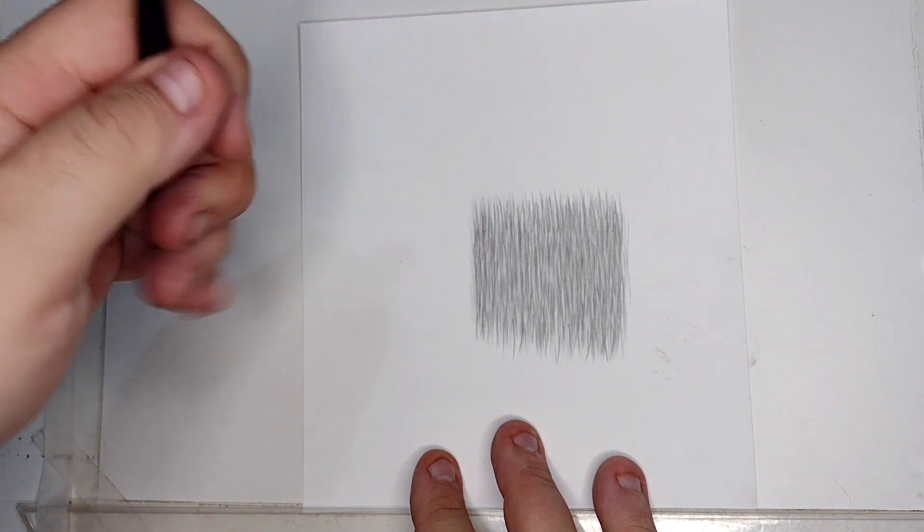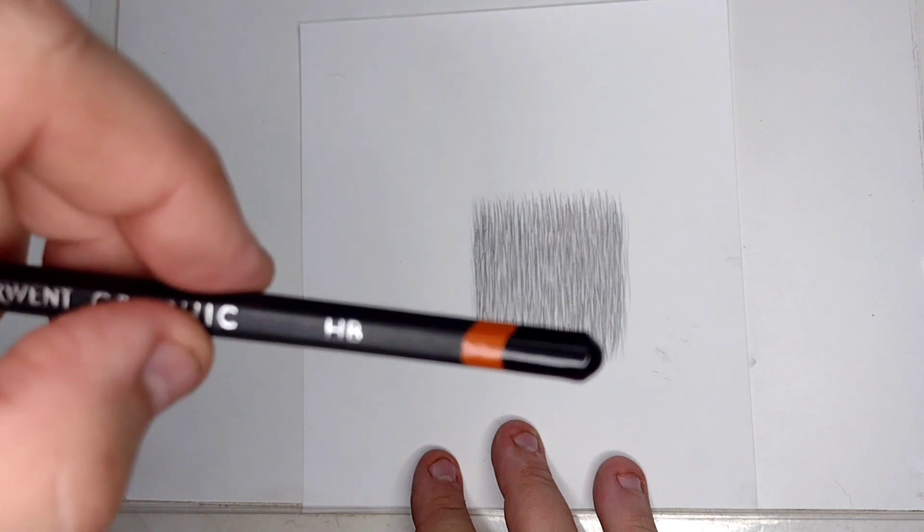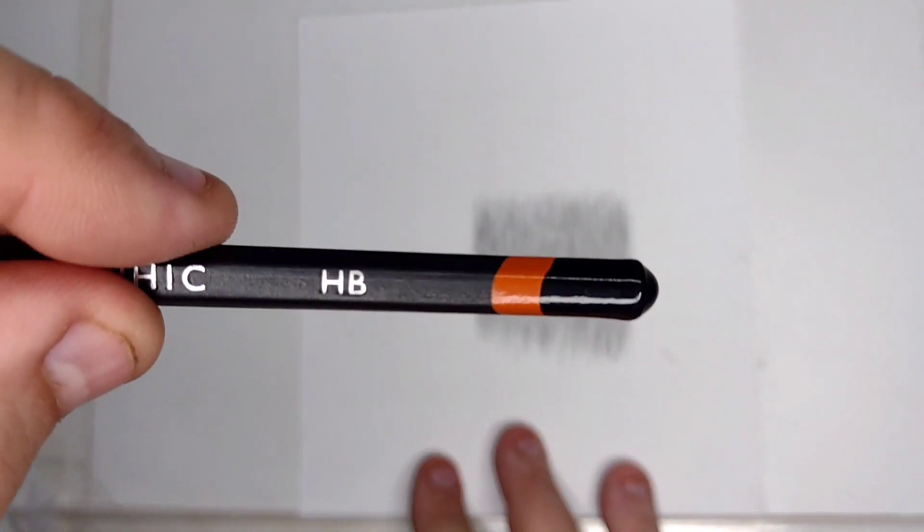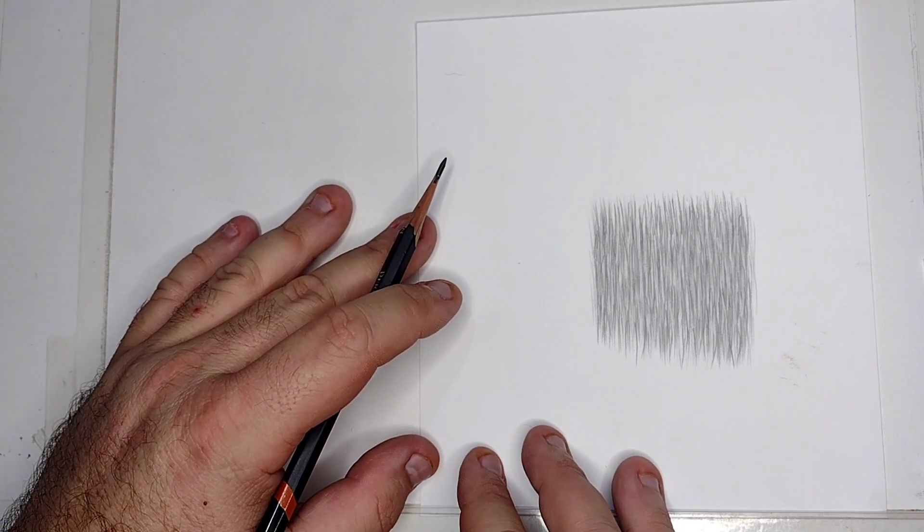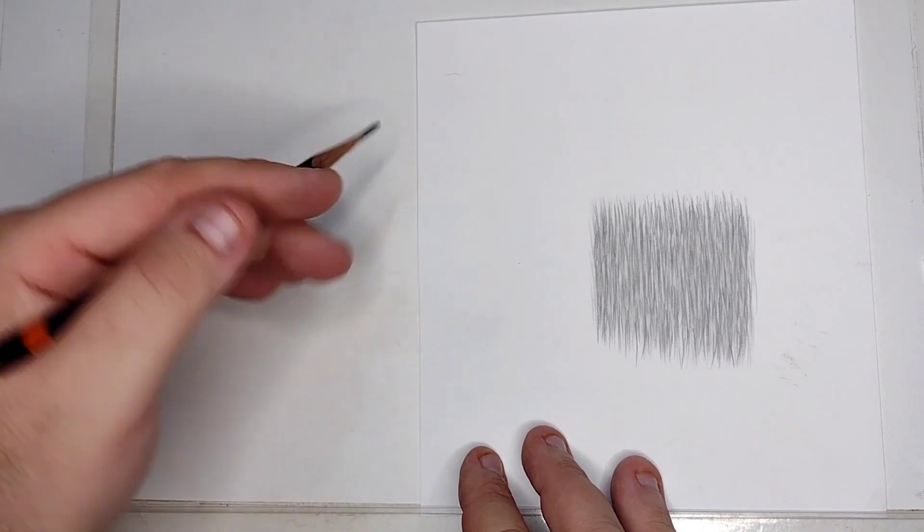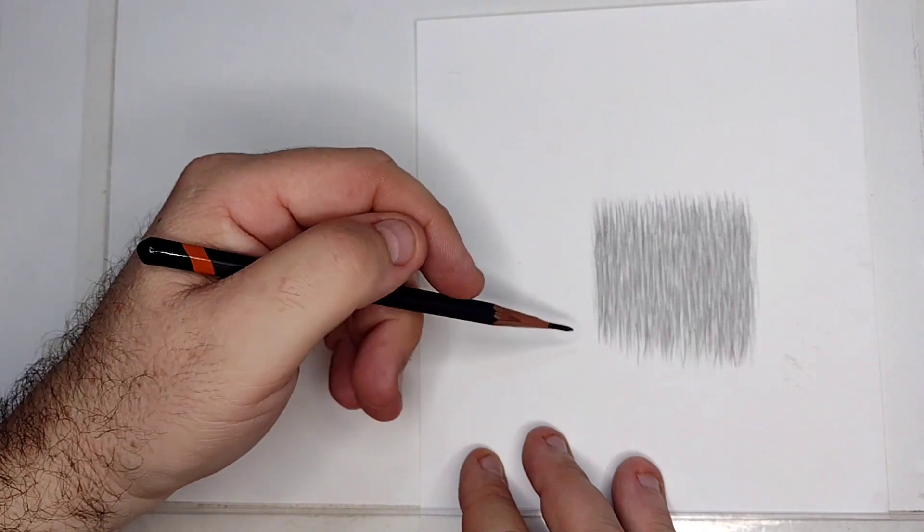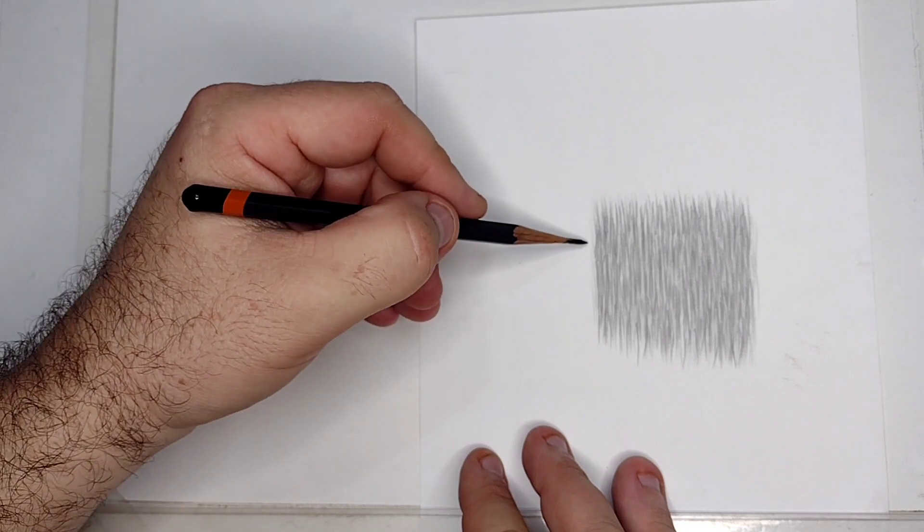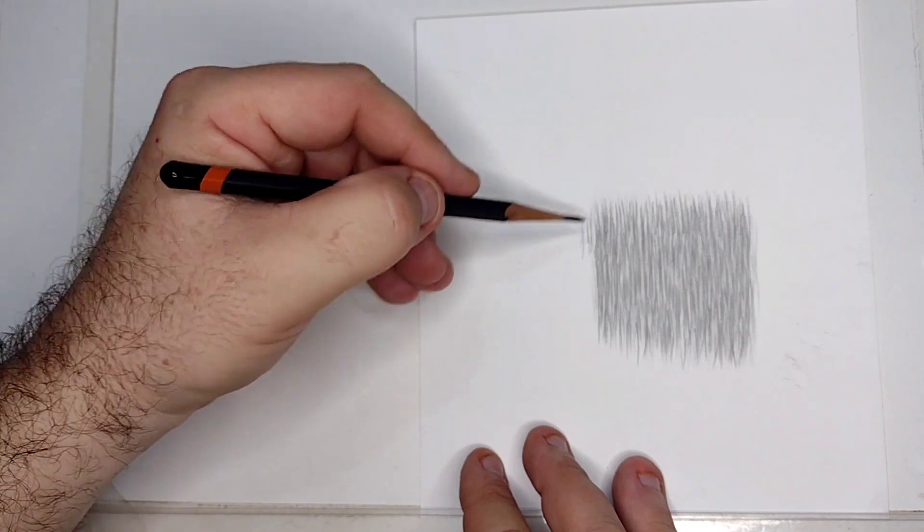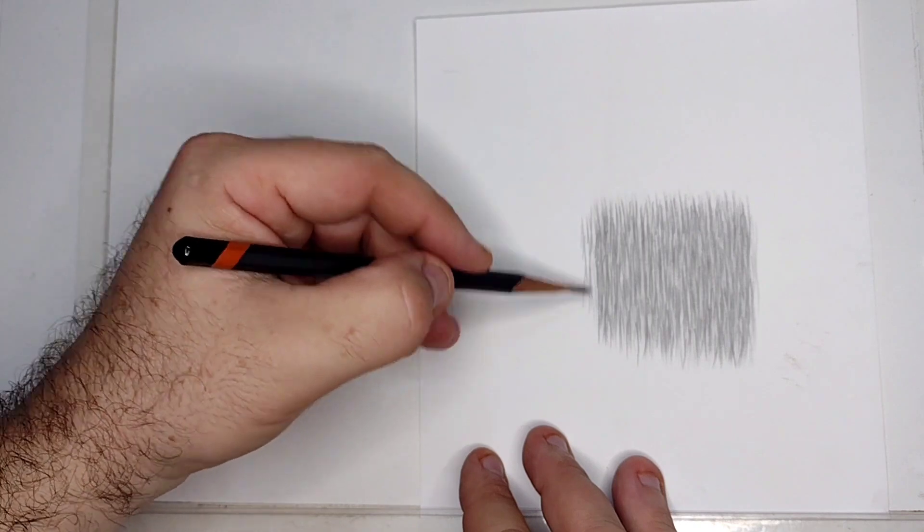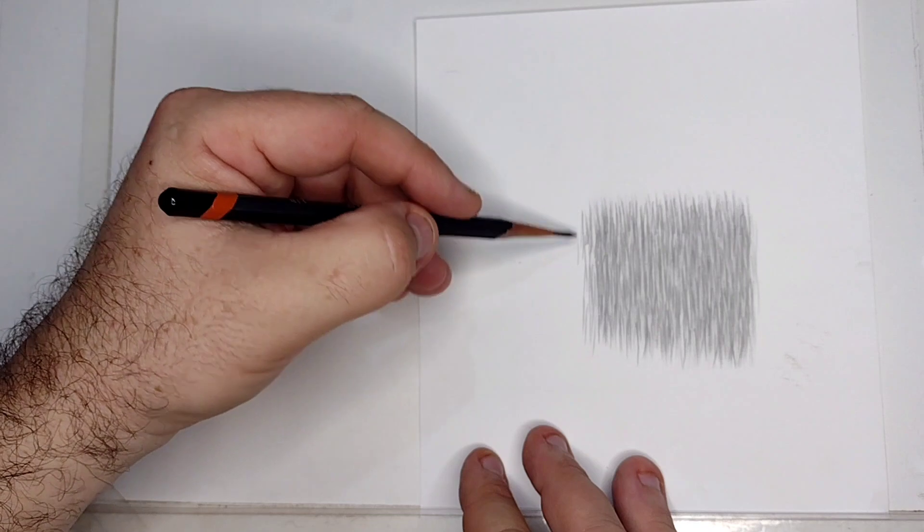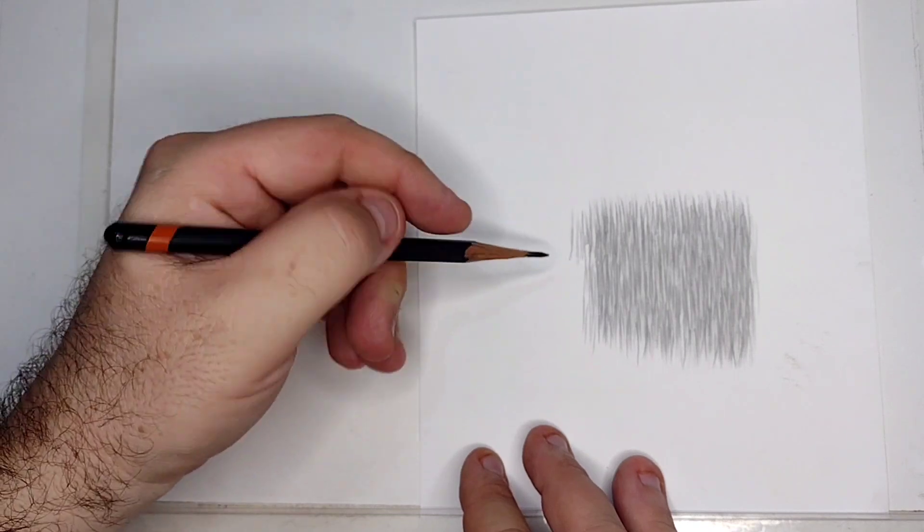We are starting with an 8B, and then we are going to 2B and 6B, and the eraser. So the idea, the basic idea is just start doing some movements. Don't be afraid if you are a beginner and you have no idea how to start it, just start it.